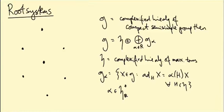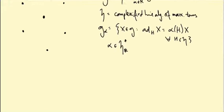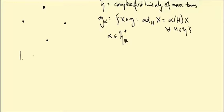Over here I've drawn the root diagram of SU(3), inside a two-dimensional vector space little h_R dual. The roots are these points drawn at the vertices of this hexagon, and there's also the zero root space. We've been gradually seeing that the salient features of this diagram carry over much more generally for any group. So far we've seen that roots occur in pairs: if alpha is a root then so is minus alpha.